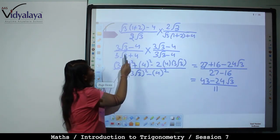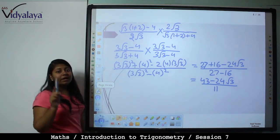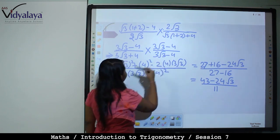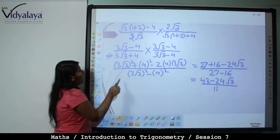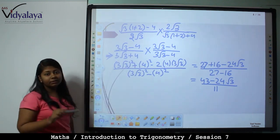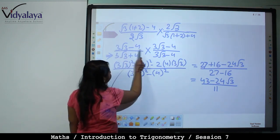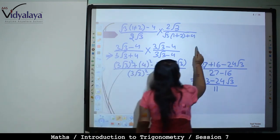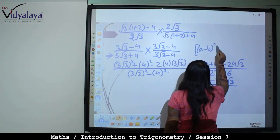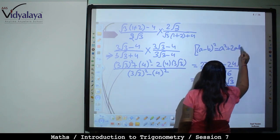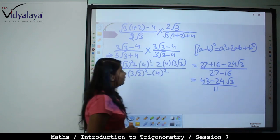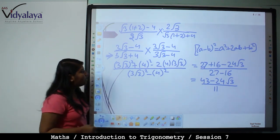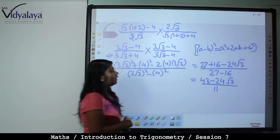So we have (3 root 3 minus 4) upon (3 root 3 plus 4). Rationalize: multiply numerator and denominator by (3 root 3 minus 4). In the numerator, since both are a minus b, use the (a minus b) whole square formula: a square minus 2ab plus b square. In the denominator, use a plus b into a minus b = a square minus b square. Solving gives 43 minus 24 root 3 by 11, which cannot be simplified further, so leave it as is.